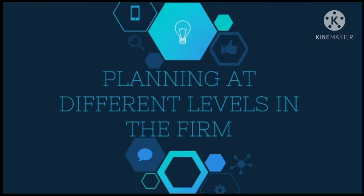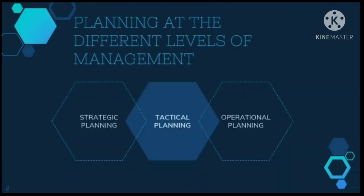Let's move on to the next topic. Different levels in the firm are all engaged in planning. However, all the resulting plans must be related to one another and directed toward the same goals. The next discussion will focus on planning that happens at different levels of management in the company. The planning at different levels of management includes strategic planning, tactical planning, and operational planning.